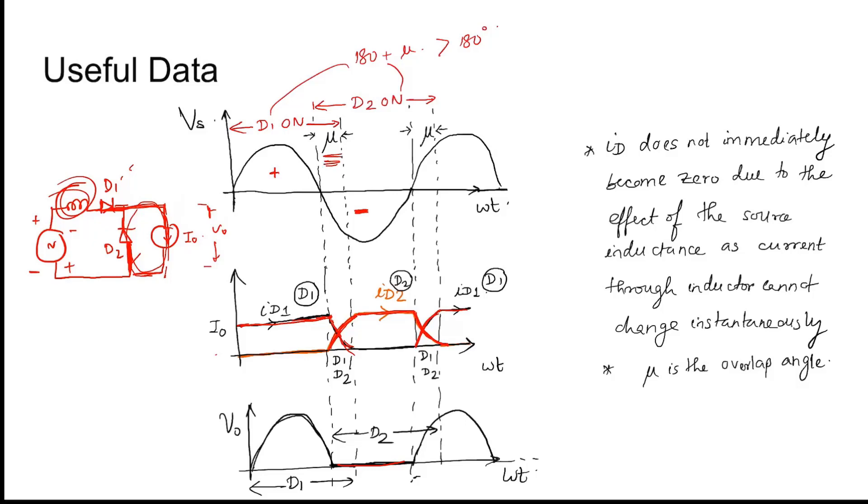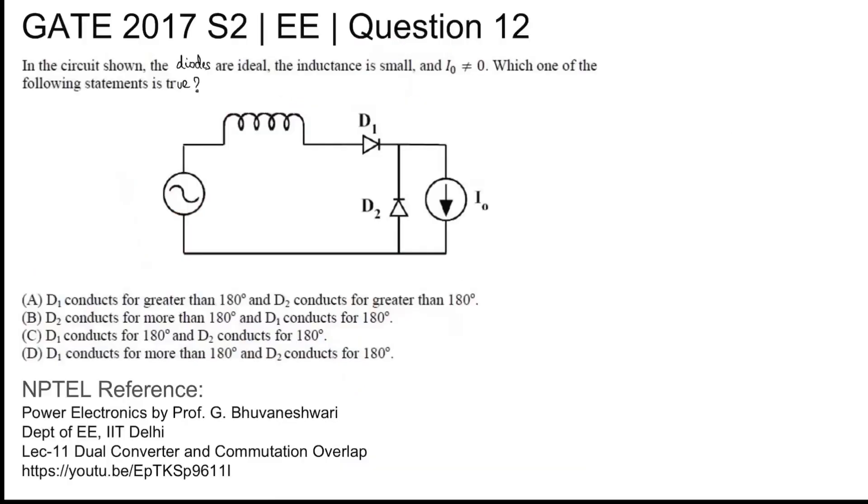Extra conduction angle of mu is appearing which is known as the overlap angle where both the diodes are on. So effective conduction happens for more than 180 degree which is 180 plus mu. Both D1 and D2 conducts for more than 180 degree.